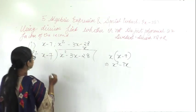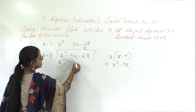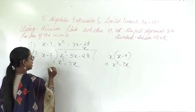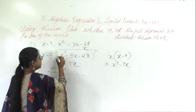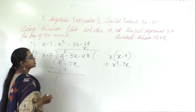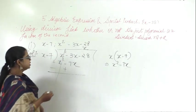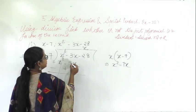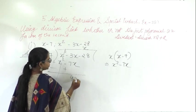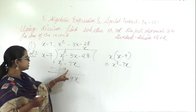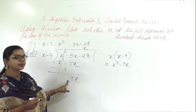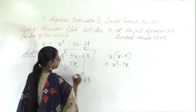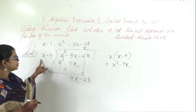So in the quotient write down x. You get x squared minus 7x. Change the sign — plus becomes minus, minus becomes plus. So plus x squared and minus x squared cancel. Plus into minus is minus, so 7 minus 3 is 4. Sign of the greater digit is positive, so 4x comes. Bring down minus 28.